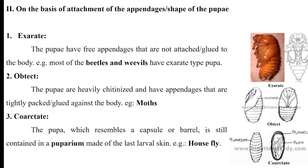Next classification is based on the attachment of the appendages. First is Exarate type — in this type of pupae, all the appendages like legs, wings, and antennae are not glued or attached to the body; they are free and can move. This type of pupae is found in Coleoptera, that is beetles. Second is Obtect type of pupae — in this type, all the appendages like wings and legs are firmly attached or glued to the body and are not free. This type of pupae is found in case of moths.